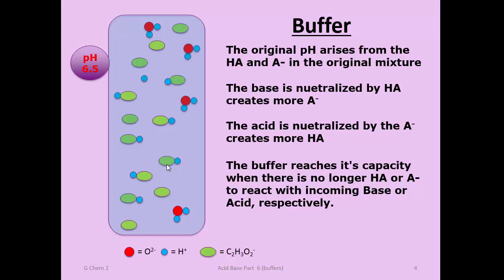If you continue to treat the buffer with acid, at some point it reaches capacity where all of the acetates are occupied. As it happens, you can see the pH changing, becoming slightly more acidic, but not significantly. But at some point the acetate will be totally consumed, and then the next addition of acid significantly changes the pH because it has no acetate weak base to interact with. With every addition of acid there's a significant jump in pH—that's your clue that you've reached or gone beyond the buffer's capacity.